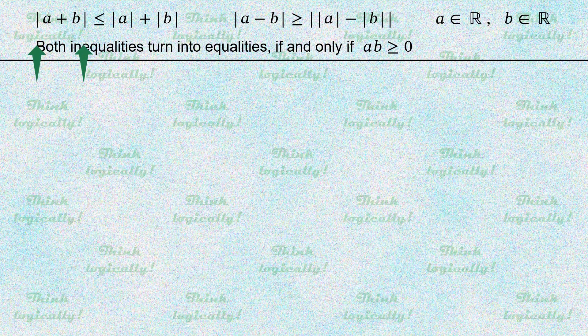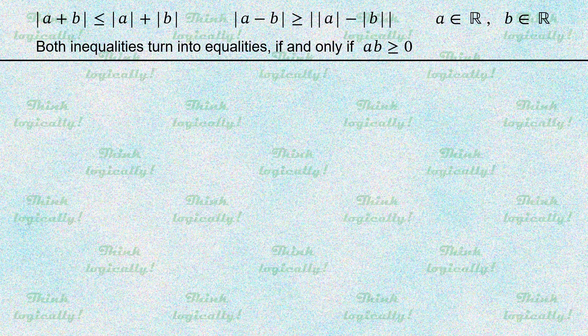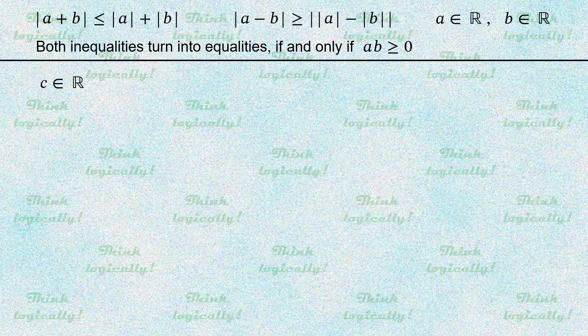The vertical bars denote the modulus of a number. The modulus of a real number is its absolute value, which can be defined as the maximum of the number and its negative.